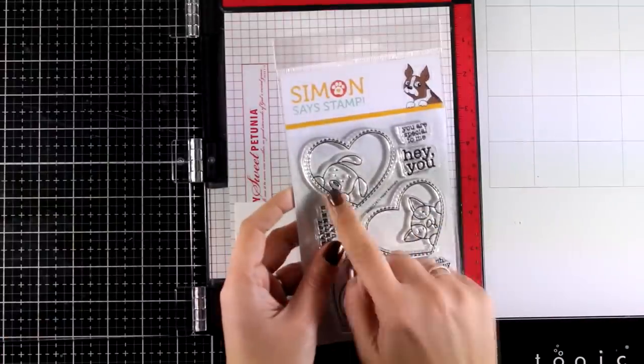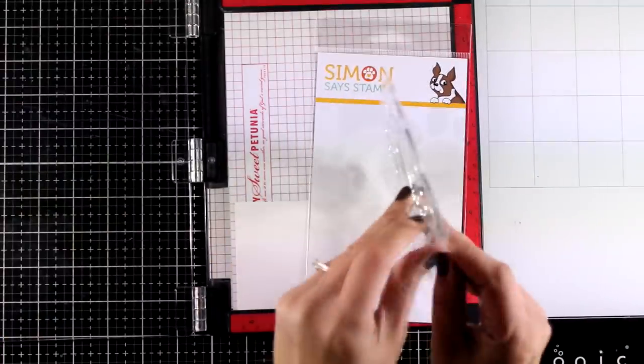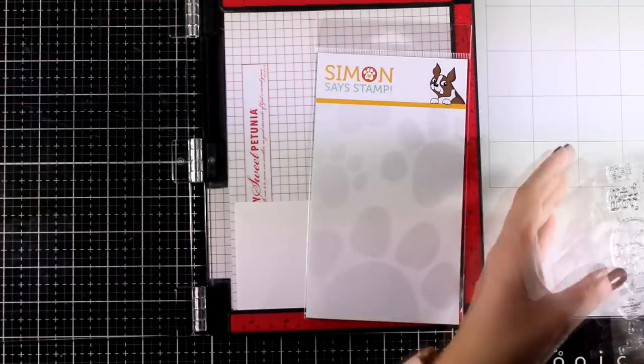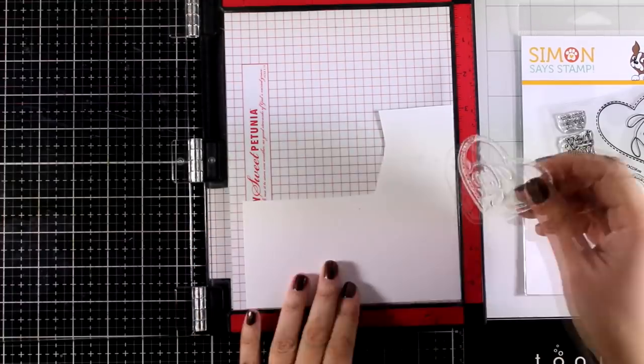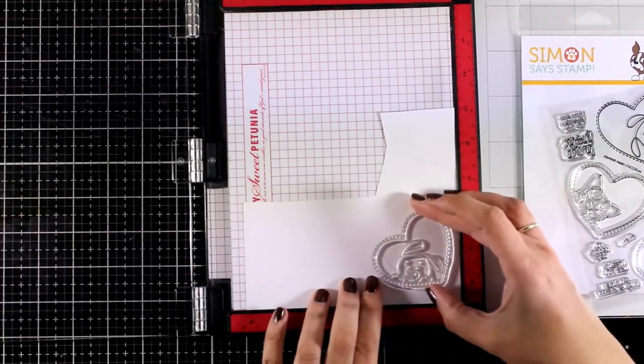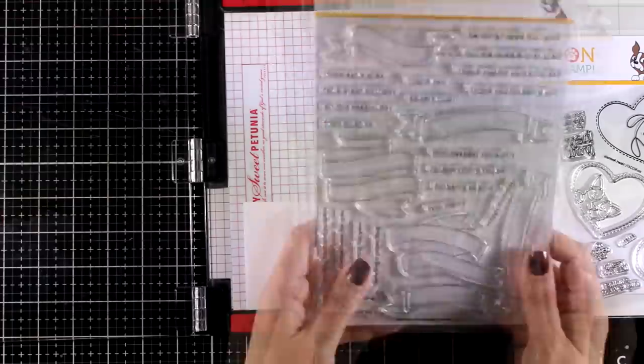And now it's time to do some stamping. I have my Misti out and I decided to go with the heart that has the little dog inside. So adorable! And since I'm doing the stamping I will stamp the sentiment as well.